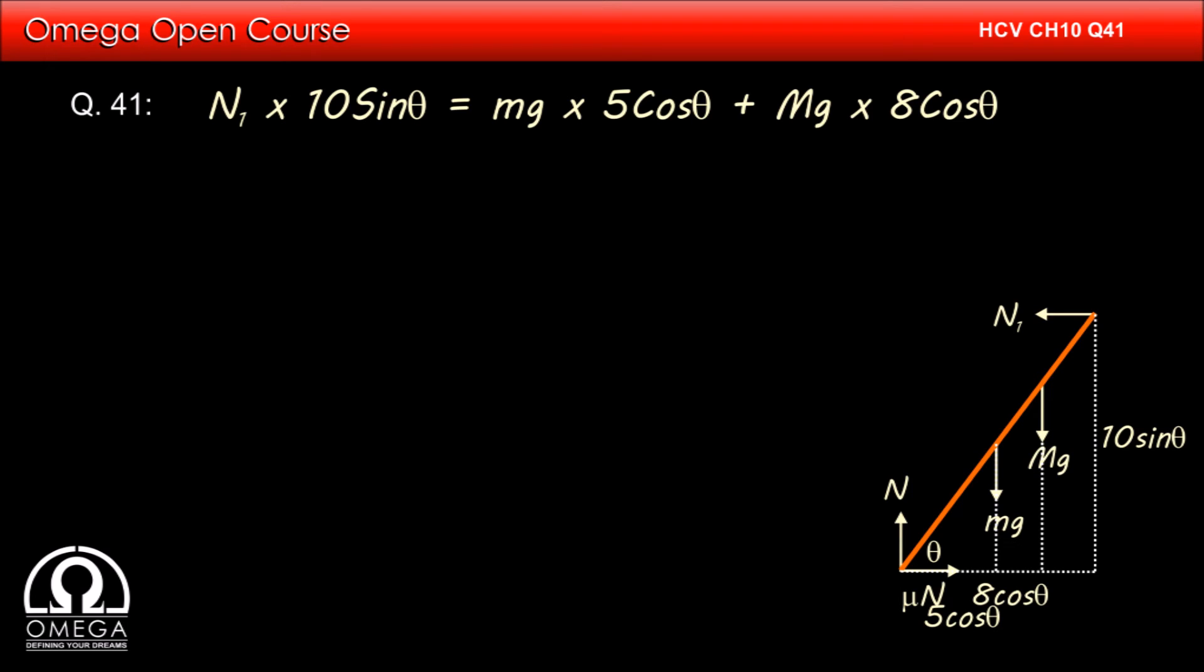Thus, the value of sinθ is 4/5 and cosθ is 3/5. Putting the values, we get N₁ × 10 × 4/5 equals 16g × 5 × 3/5 plus 60g × 8 × 3/5.